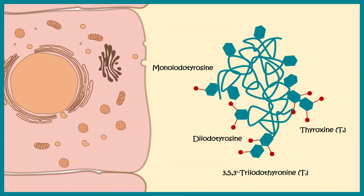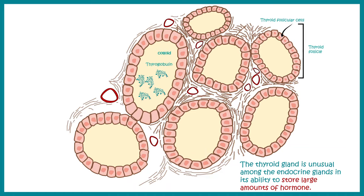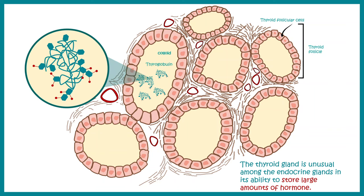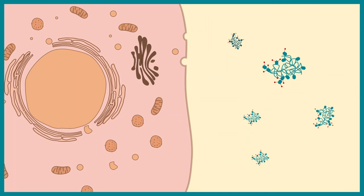All of these iodinated residues are still linked within the thyroglobulin chain in an immature thyroglobulin format. A key and unusual fact about the thyroid gland is that it stores these hormone precursors in this format for a very long time — this long-term storage is quite unique to the thyroid gland.